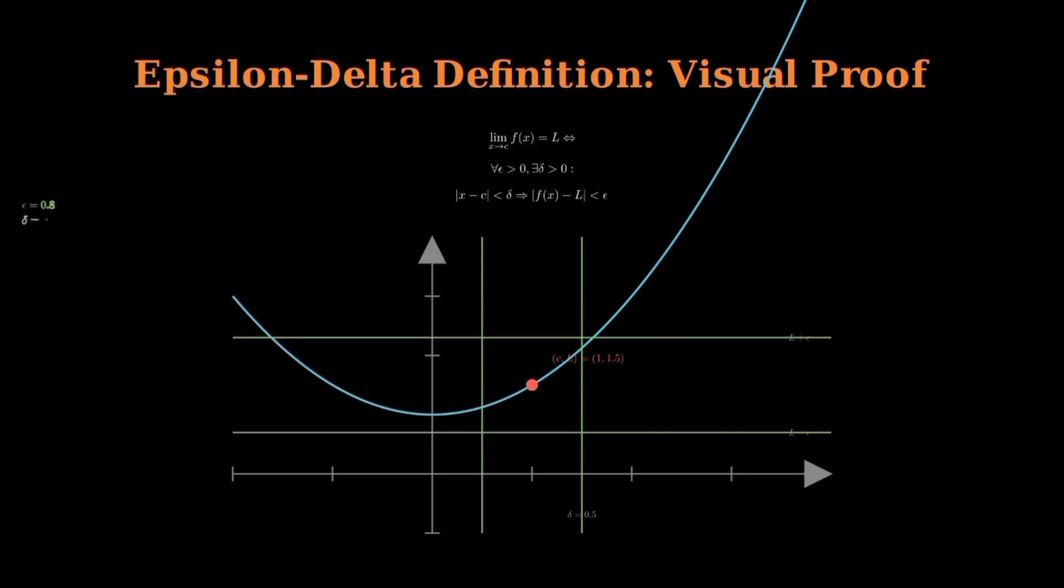The epsilon bands are horizontal lines at l plus epsilon and l minus epsilon. Now we must find a delta such that whenever x is within delta of our point c, the function value stays within the epsilon band. For this quadratic function, we can choose delta equals 0.5. Notice how all points within delta of c have function values within epsilon of l.